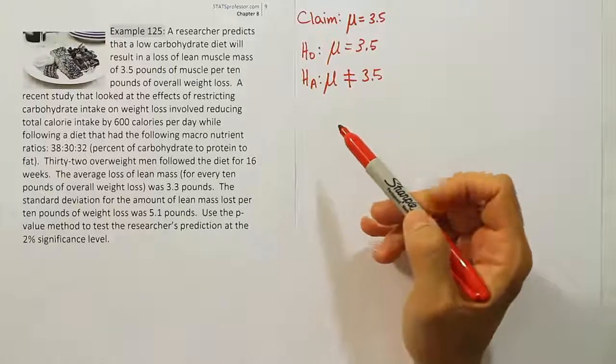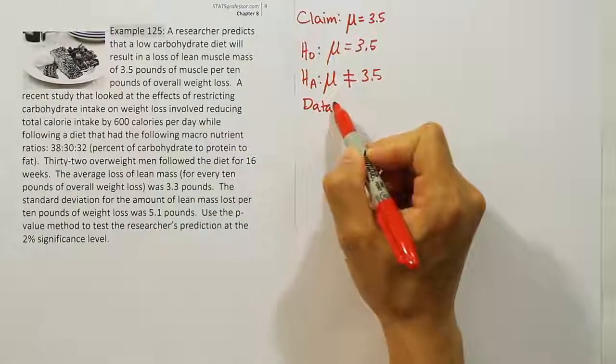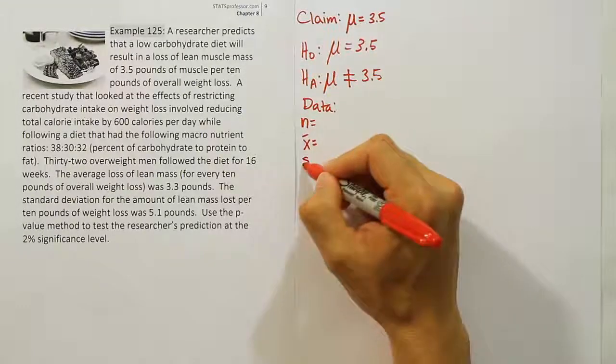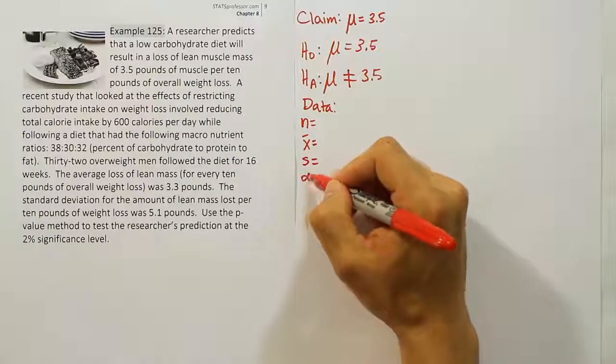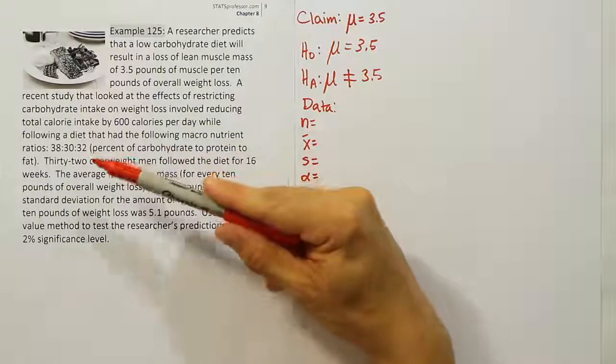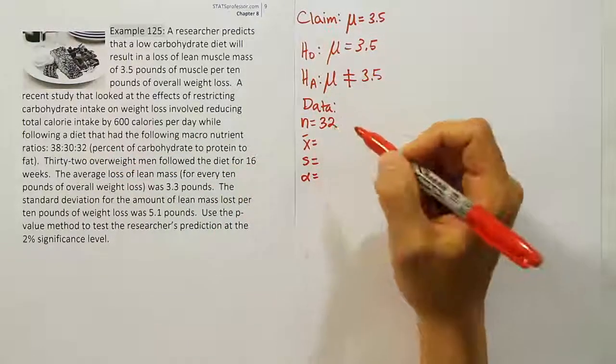Let's go on to the next step of the problem, which is to collect the data. Let's copy down the numbers they gave us. We'll have n equals, x̄ equals, standard deviation equals, and alpha. The n in the problem is 32 overweight men.